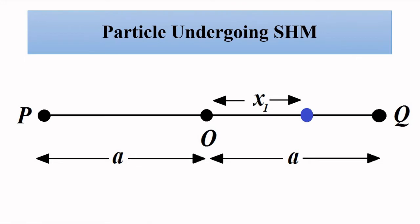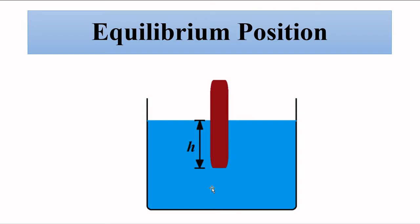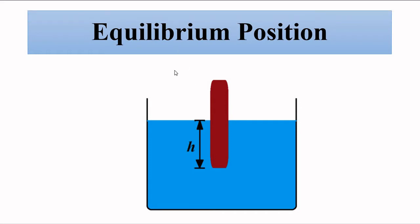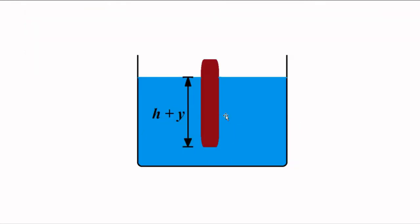To understand this up and down movement of the cylinder, let us say we have a vessel containing a liquid of density rho. In that vessel we have a wooden cylinder of mass m, which is submerged such that a portion of length h of that cylinder is inside the liquid. This is the initial equilibrium position. Now let's say this wooden cylinder is pushed further down by an additional distance y.